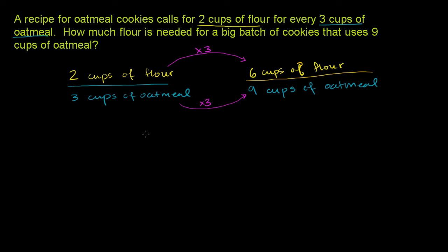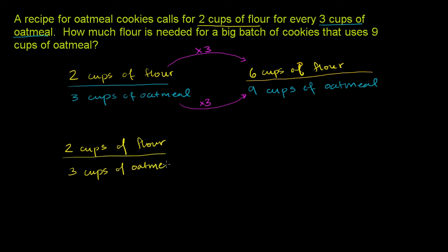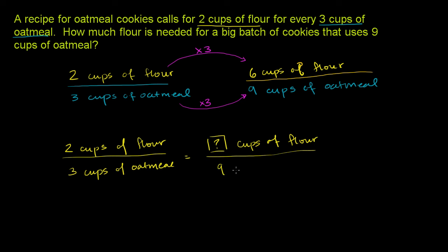Another way you could think about it is to set up a proportion. You could say two cups of flour over three cups of oatmeal is equal to some unknown number of cups of flour over nine cups of oatmeal.